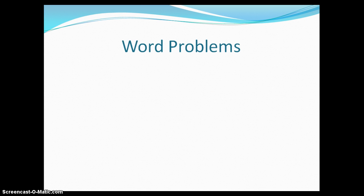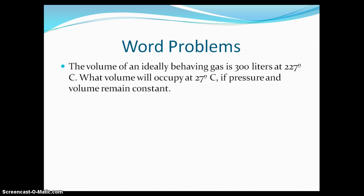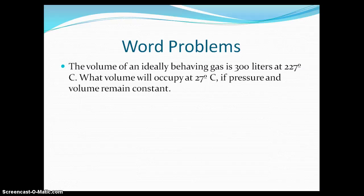Now we are going to solve a couple word problems dealing with Charles' Law. Let's look at problem one. The volume of an ideally behaving gas is 300 liters at 227 degrees Celsius. What volume will occupy at 27 degrees Celsius if pressure and volume remain constant?